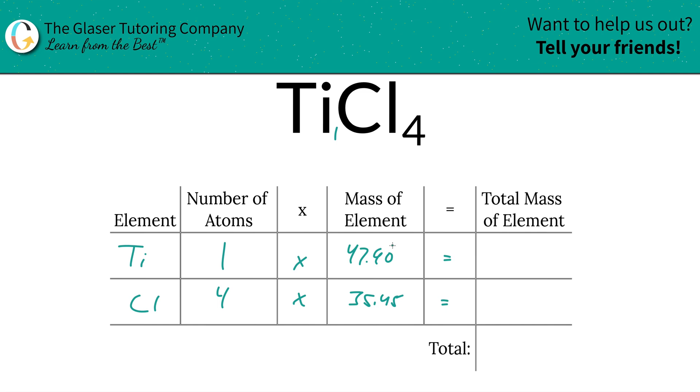And then we're going to find the total mass of the element by simply multiplying this row across. So the total mass of titanium in the compound is going to be 47.90 units of mass, and chlorine therefore is going to be roughly 141.8.